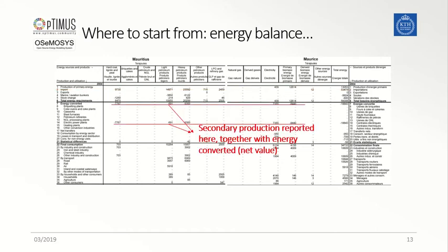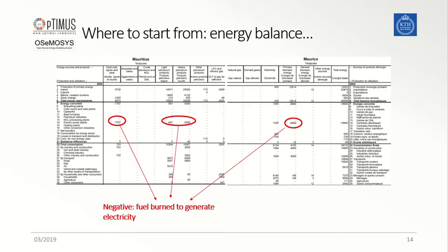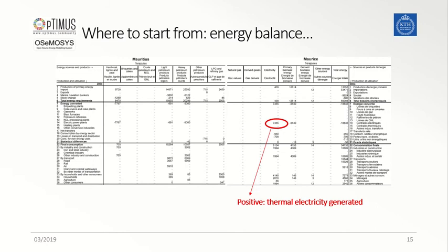Moving on in the table, starting from the first bold line separator, data linked to the secondary energy level are provided. In this area of the table, negative values represent energy that is consumed and burned to generate electricity, whereas positive values represent energy that is produced, namely electricity, as a result of conversion processes.